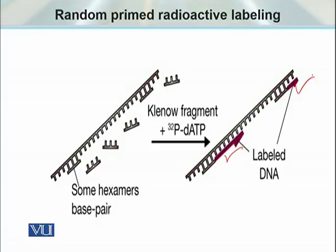This method is preferred over both previously discussed methods because it gives very high activity of the probes. The reason is that the probe being synthesized contains a completely newly synthesized DNA strand, and the maximum number of radioactively labeled nucleotides are incorporated into it. The plus point of having high activity probes is that we can identify the smallest amounts of DNA found on the membrane during Southern blotting.